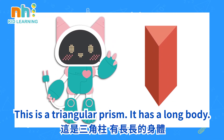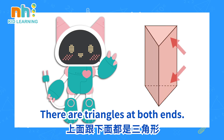This is a triangular prism. It has a long body. There are triangles at both ends.